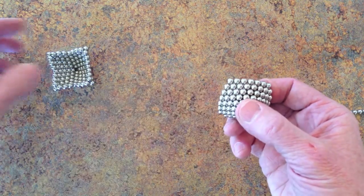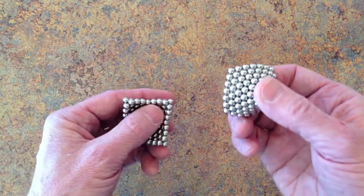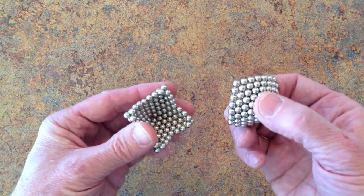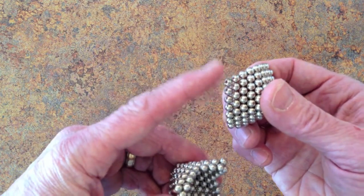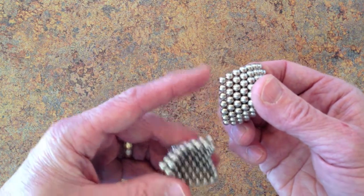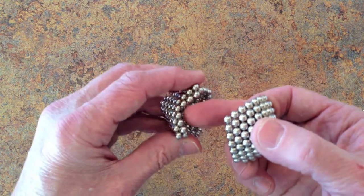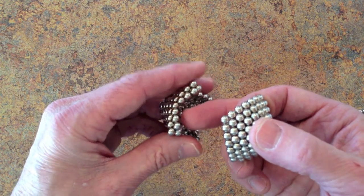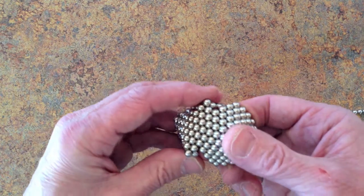Then you join this convex pyramid with the concave pyramid, placing the points of the convex into the valleys of the concave, like that.